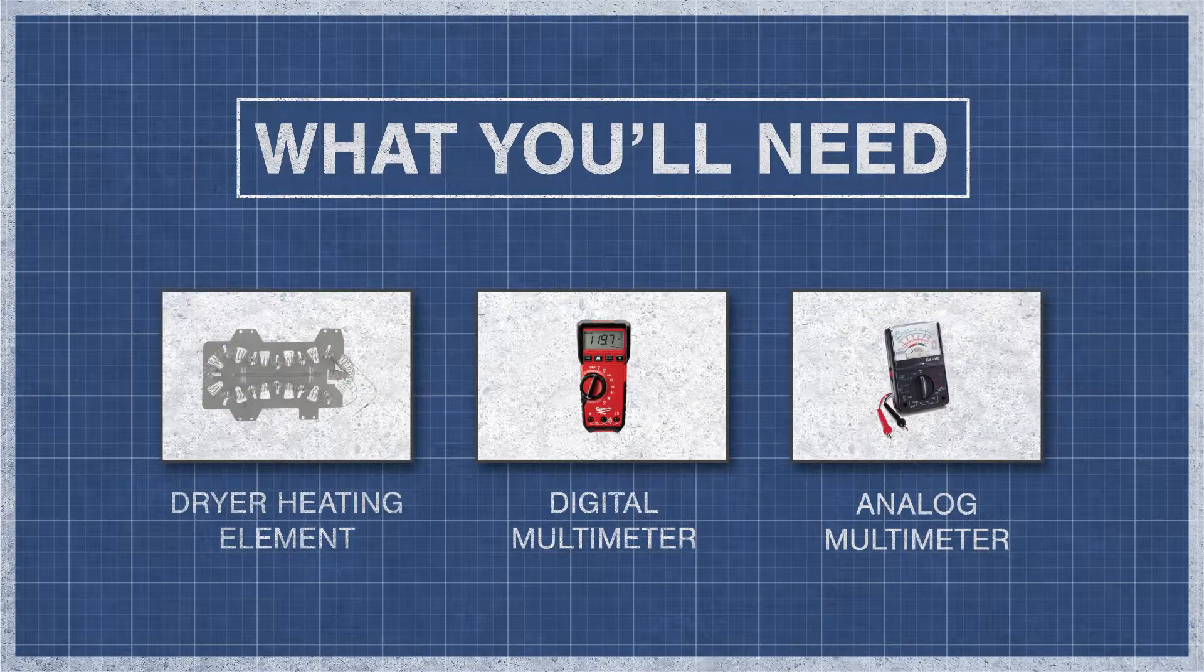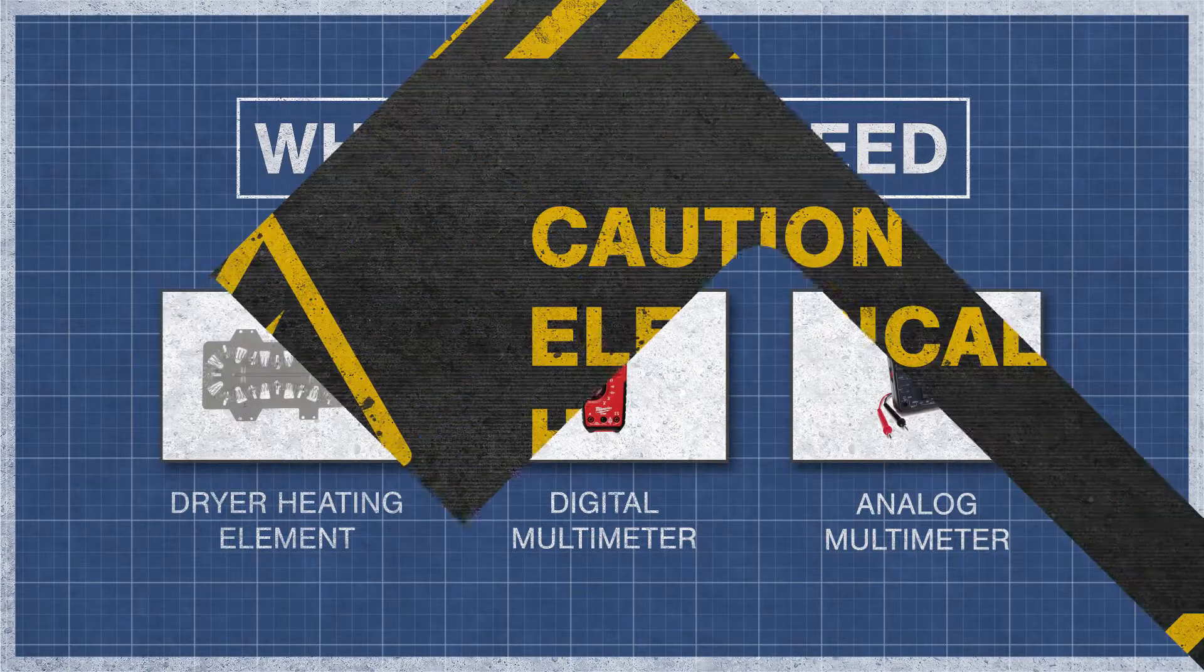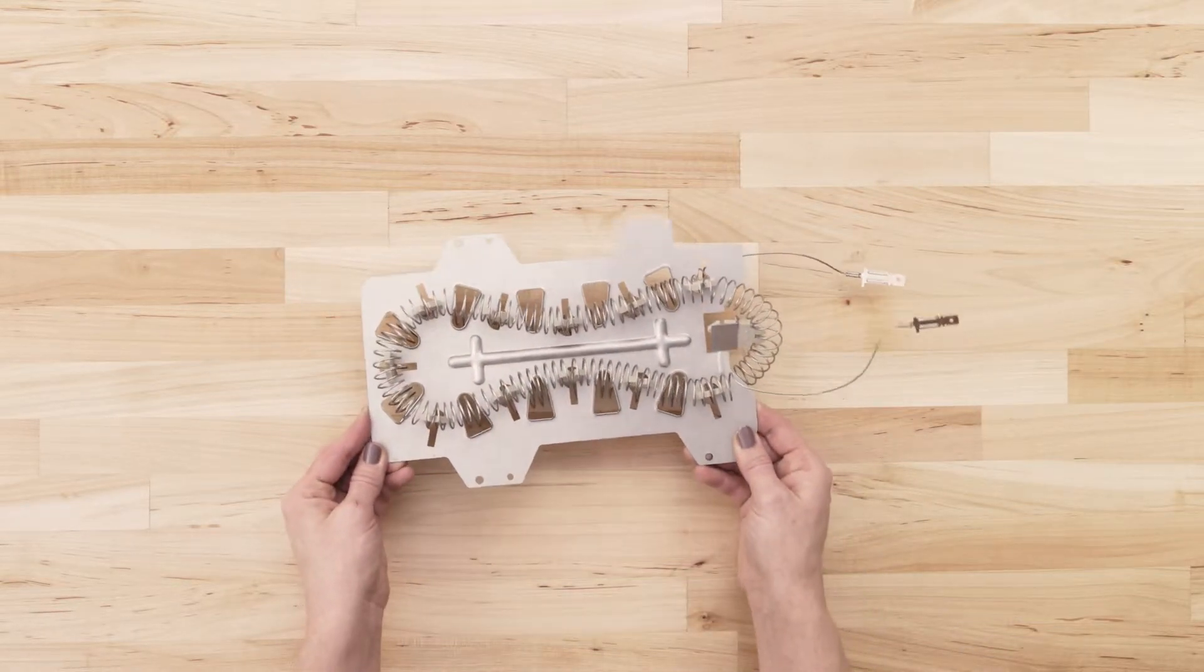All you'll need is your dryer heating element and a digital or analog multimeter. To be safe, turn off the breaker and fully unplug the dryer from the receptacle. Now separate or remove the heating element.